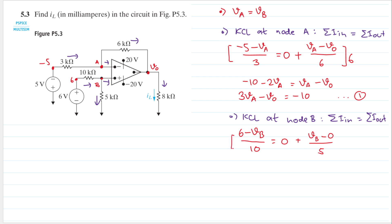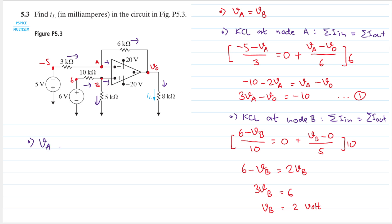Multiplying both sides by 10 to cancel the denominator: we get 6 minus vB equals 2·vB, so 3·vB equals 6, and therefore vB equals 2 volts. Since vA equals vB, we also have vA equals 2 volts.